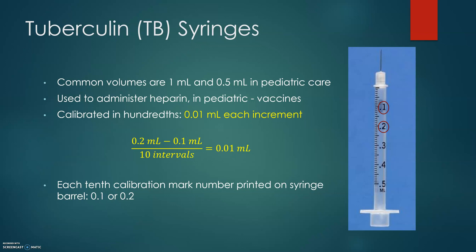Another commonly used syringe for small dosages is the tuberculin syringe. Common volumes are 1 milliliter or 0.5 milliliter, and it is mostly used in pediatric care. It is used to administer highly sensitive medications like heparin for adults and in pediatric vaccines. The calibration of these syringes is in hundredths. The larger calibrations are labeled 0.1, 0.2, 0.3, 0.4, 0.5, so the total capacity is 0.5 milliliter, and each larger calibration is divided into 10 smaller ones.